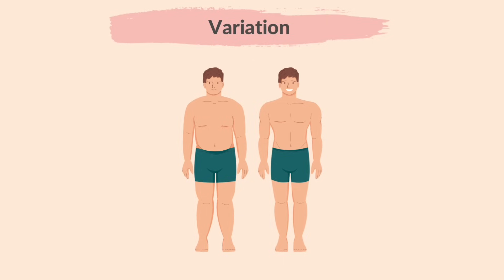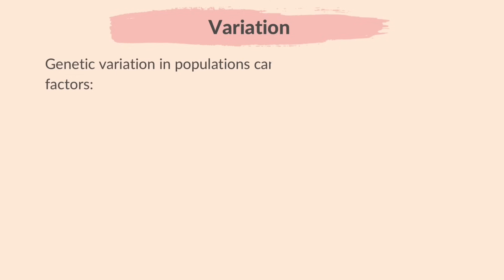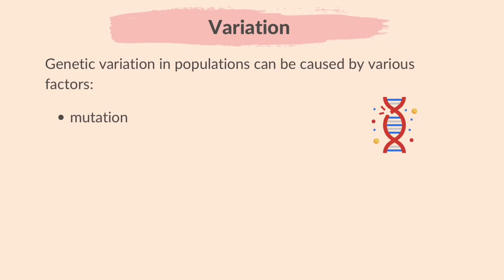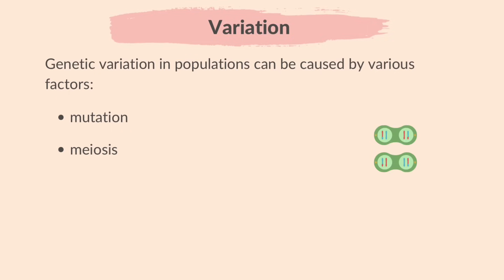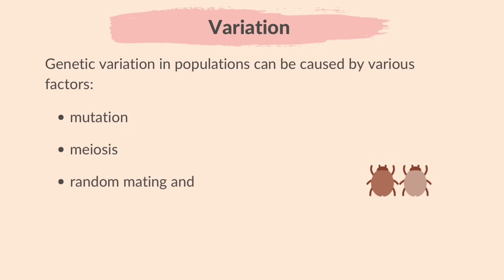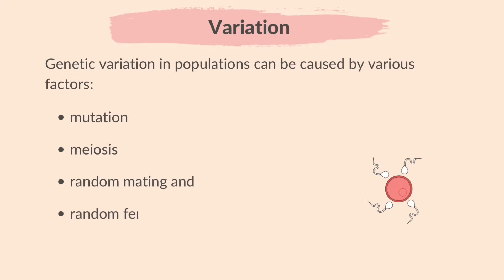Genetic variation in populations can be caused by various factors: mutation, meiosis, random mating and random fertilization.